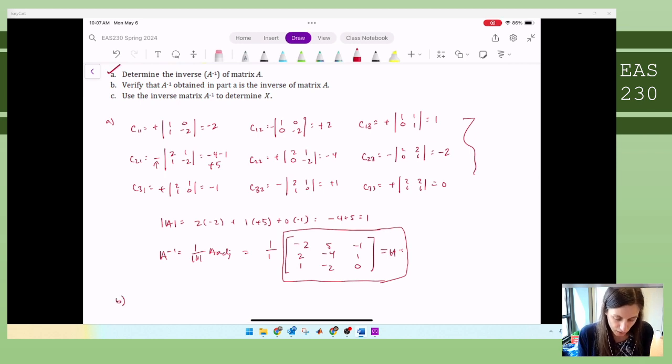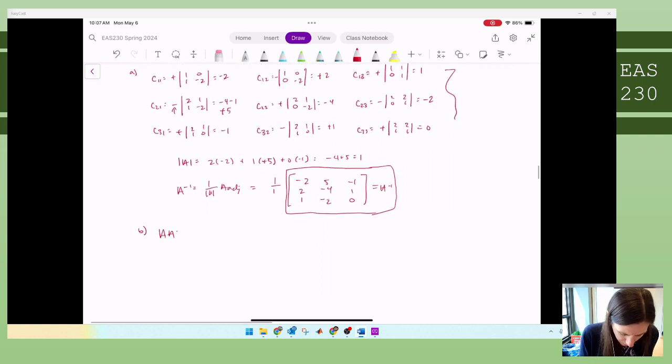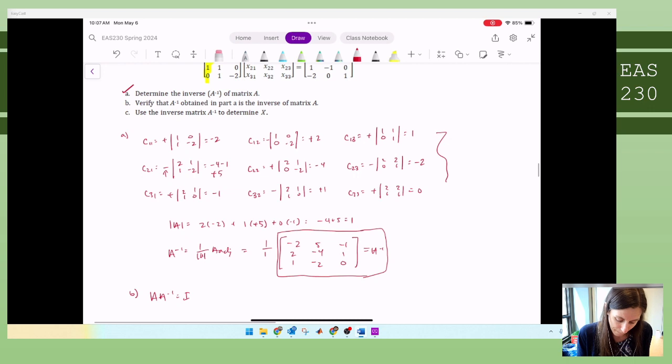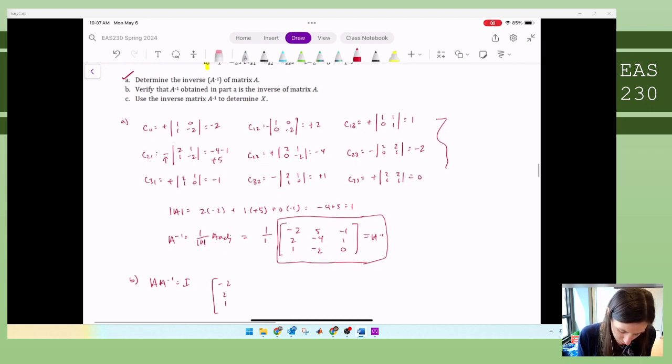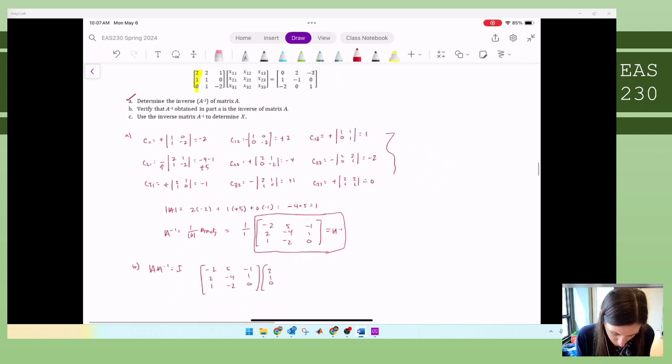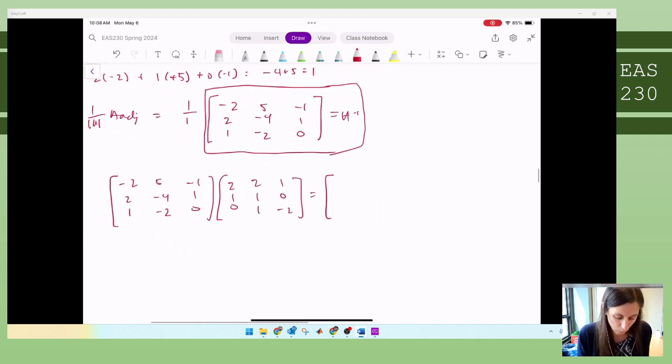B, verify that the inverse is the inverse. So that just means A times A inverse equals identity. It doesn't matter which one goes first. So I just need to multiply these two matrices together. First row, first column. I get negative four plus five plus zero. That equals one. That's what I expected. Second row, first column. Four minus four plus zero equals zero. What I expected. Third row, two minus two plus zero equals zero. There we go.